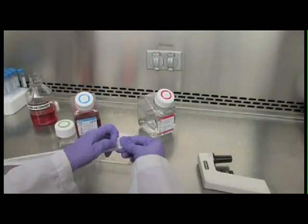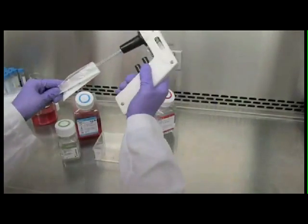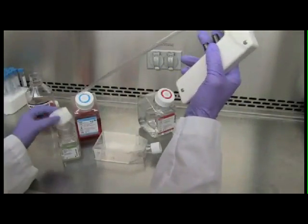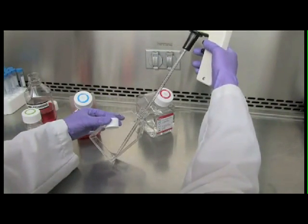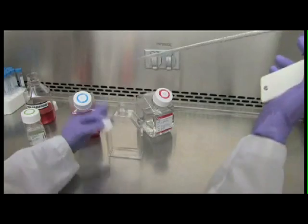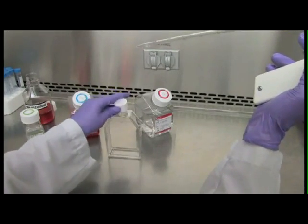Add your cell dissociation reagent to remove cells from the plate. Use just enough solution to cover the cell sheet. Consider using a gentle cell dissociation reagent, such as Triple Express, to avoid damaging your cells during dissociation.